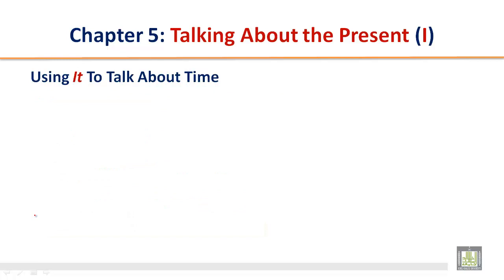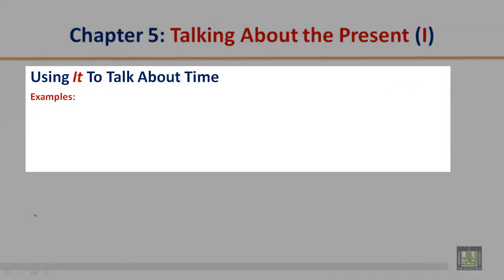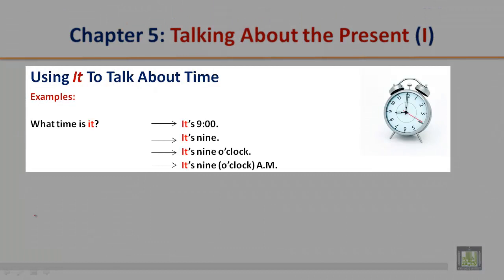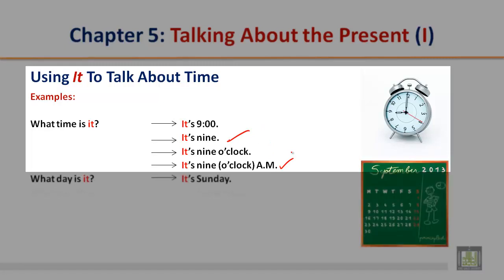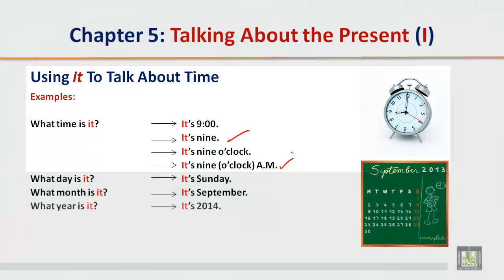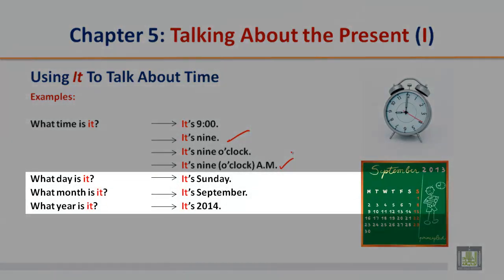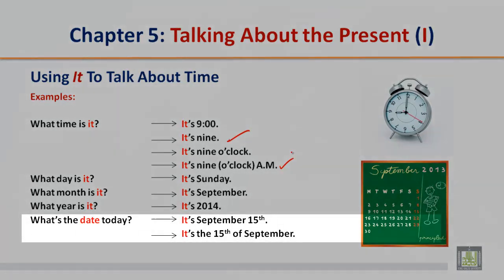Using 'it' to talk about time. Examples: What time is it? It's 9 o'clock. It's 9 a.m. What day is it? It's Sunday. What month is it? It's September. What year is it? It's 2014. What's the date today? It's September 15th. It's the 15th of September.